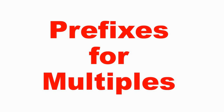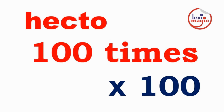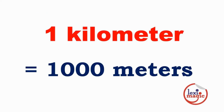Next, we will look at prefixes for multiples of the basic units. The prefix deca indicates 10 basic units. The prefix hecto indicates 100 basic units. The prefix kilo indicates 1000 basic units. 1 kilometer equals 1000 meters.